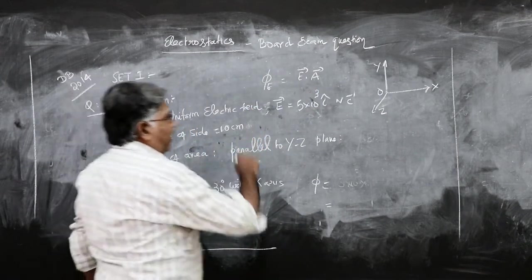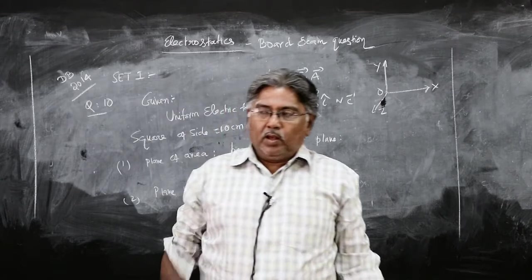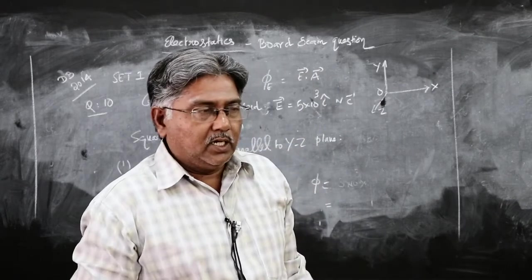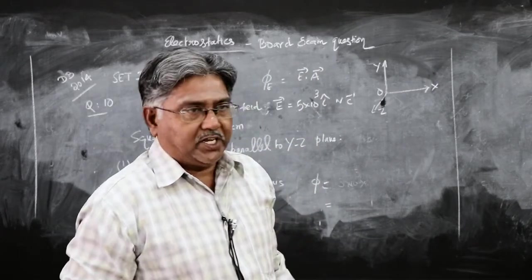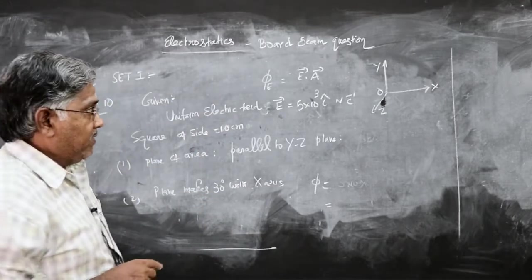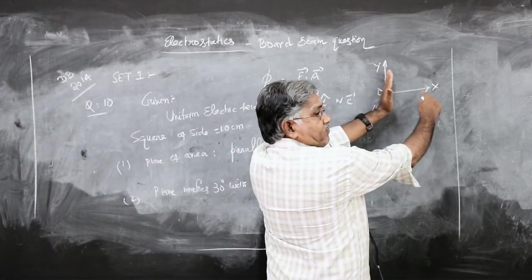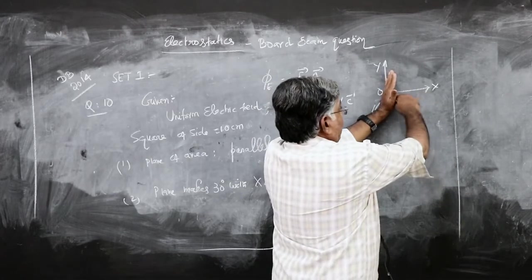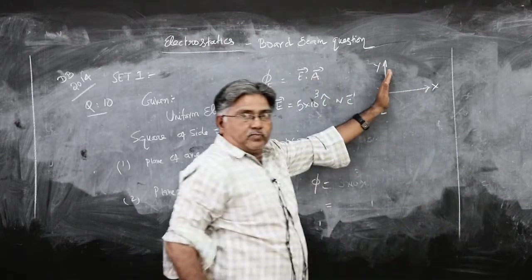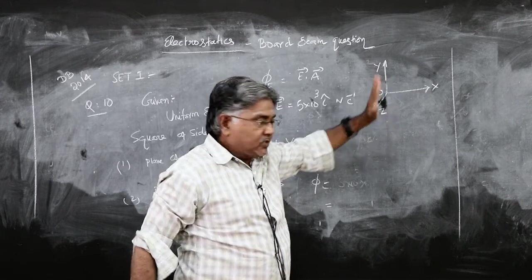Now take this case. Because the area vector has a direction perpendicular to the plane of the area, therefore the area vector will be like this. The electric field is also like this, along the x-axis or parallel to the x-axis.